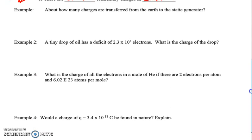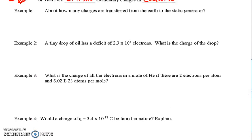Let's do a few examples to finish up here. About how many charges are transferred from the earth to the static generator when we charge it up? Remember, the static generator starts off neutral, and when it becomes charged, we're adding excess negatives on there. Now, you didn't know there was a negative charge. I'm telling you right now. And we already just learned that the Q of the static generator is about 1 times 10 to the negative 6 coulombs.